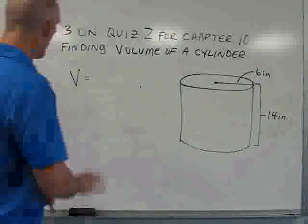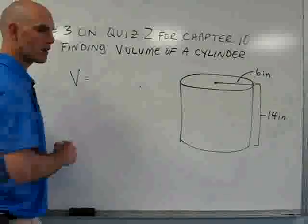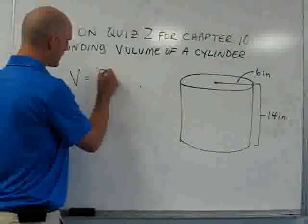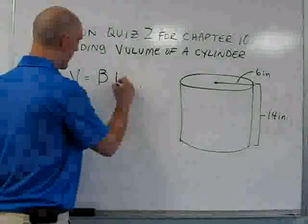We know that the volume of a cylinder can be found by multiplying the area of the base, which is a circle, times the height.